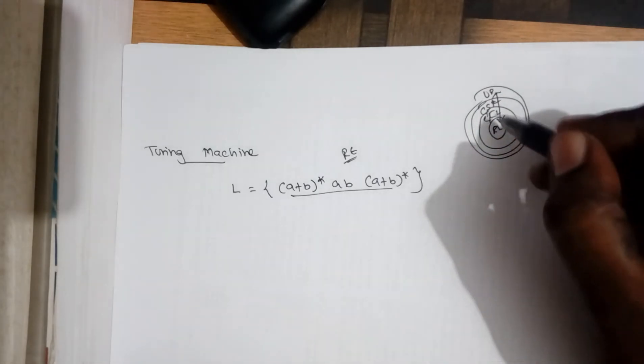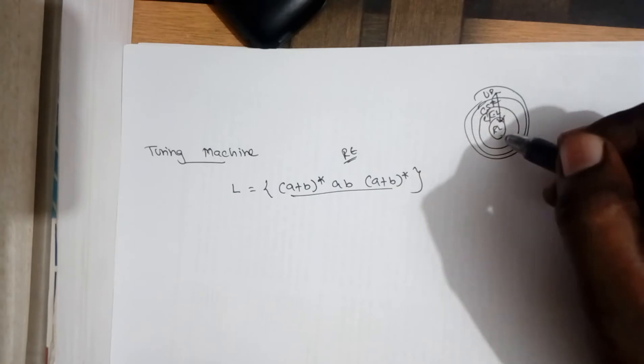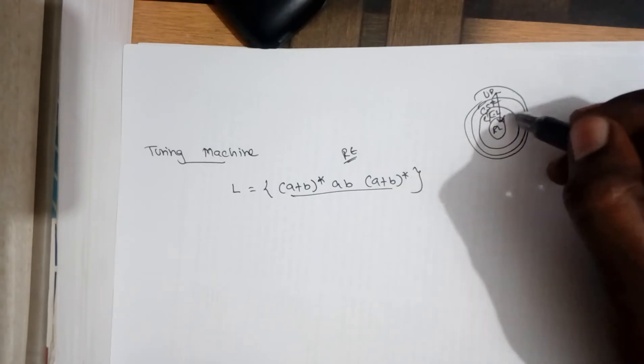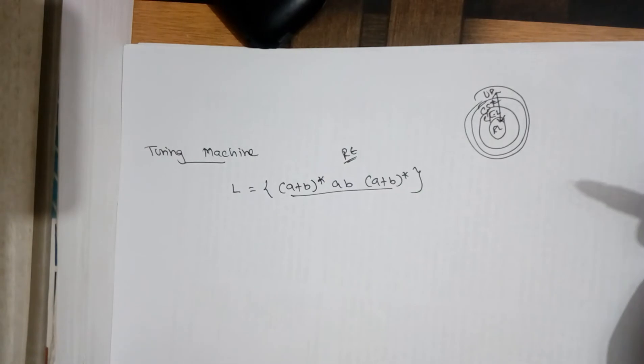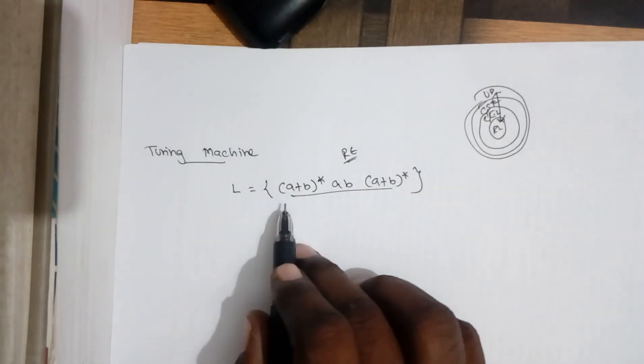So whenever it is a context free language or context sensitive language or a regular language, any problem we take, we can solve that using a Turing machine. So we are going to consider one example for this criteria.